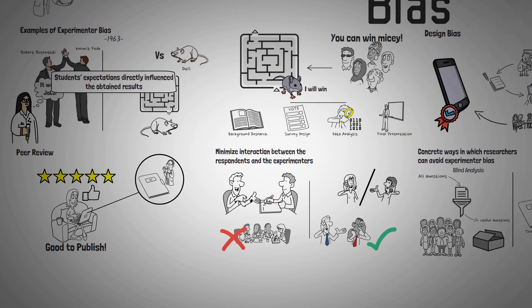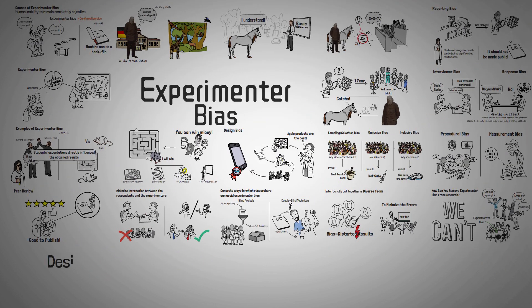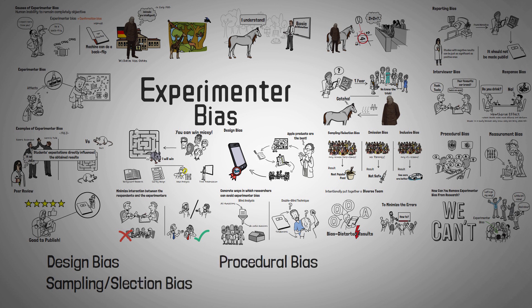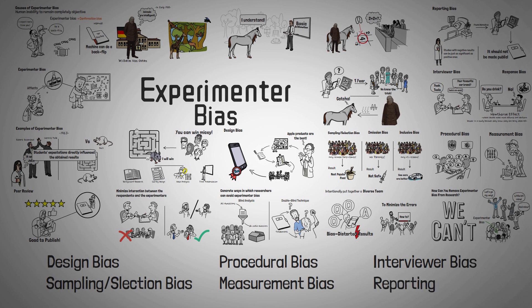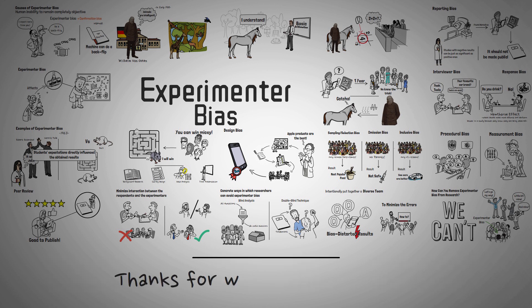As you can see, there are many different types of biases, and although they can cause a lot of trouble in research, experimenters have come up with some good ways to limit or remove the effects of their biases. That's all for today! Thanks for watching this video — we hope you enjoyed it, found it helpful, and we hope to see you in our next video!